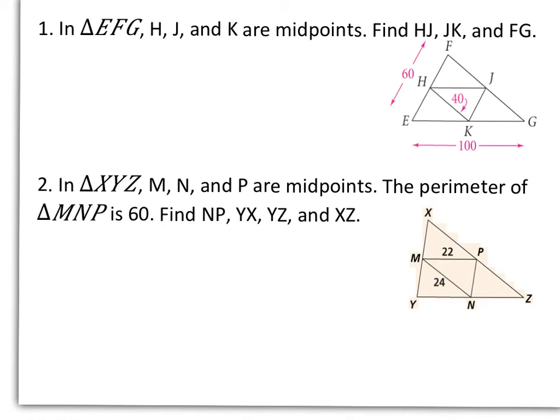Let's look at some examples of using the triangle midsegment theorem. In number one, it says in triangle EFG, H, J, and K are midpoints. Find HJ, JK, and FG. So we're looking for the lengths of our missing segments.